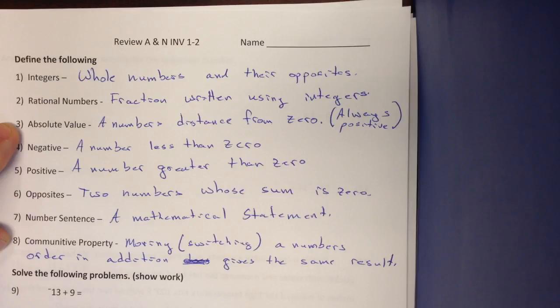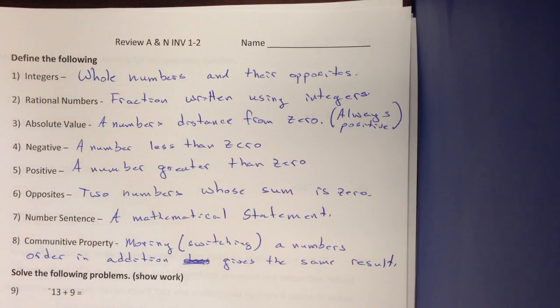Absolute value, a number's distance from 0. It's always positive. How far down the number line did you go? It doesn't matter if you go to the left or the right. The absolute value is just a distance from 0. So it's always positive.